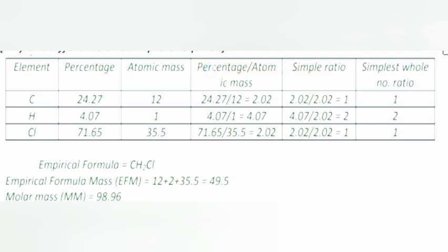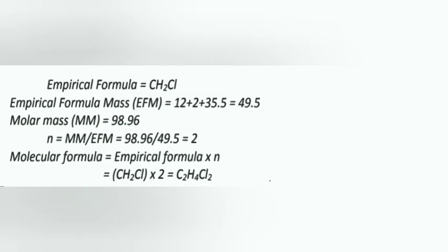So the empirical formula is CH2Cl. Empirical formula mass equals 12 plus 2 plus 35.5 equals 49.5. Molecular mass is given as 98.96. So n equals molecular mass divided by empirical formula mass, so n equals 2. Molecular formula equals empirical formula times n, that is CH2Cl times 2.